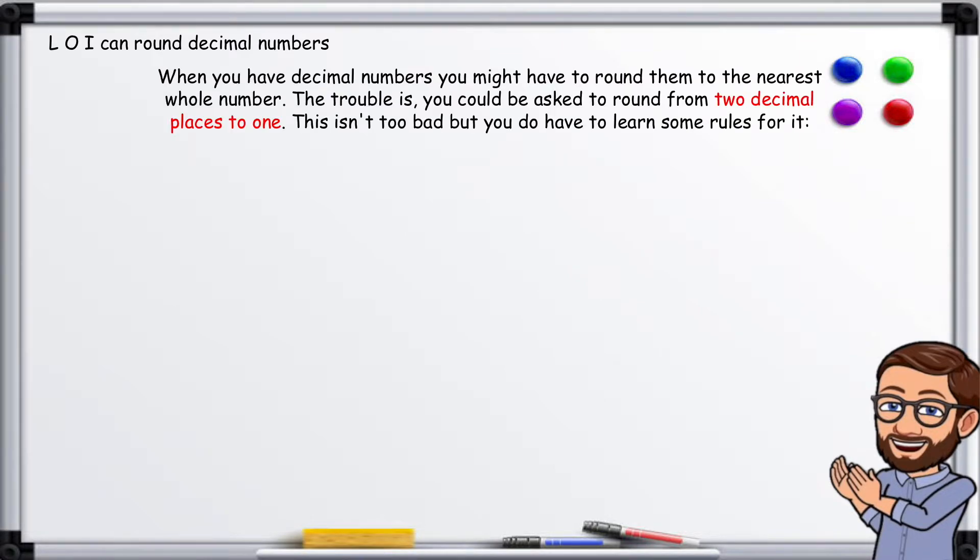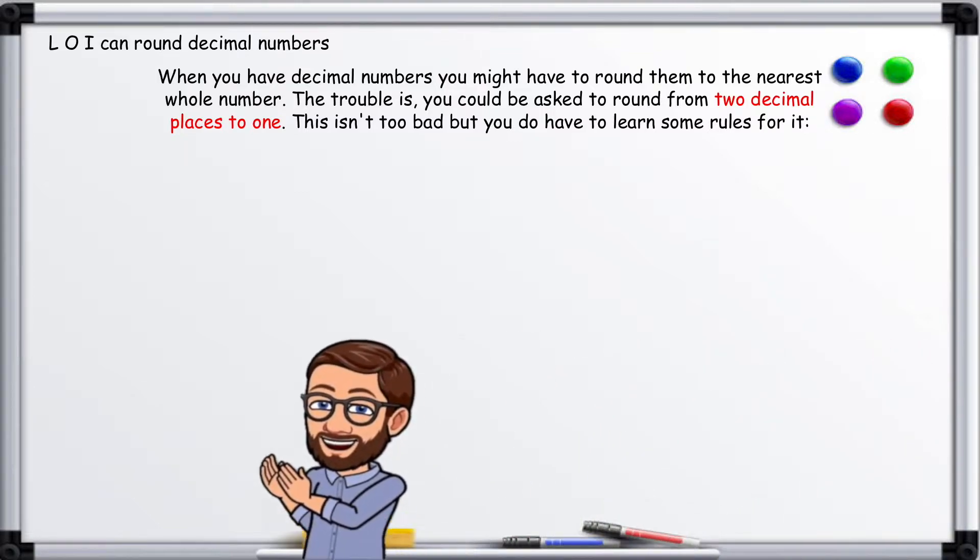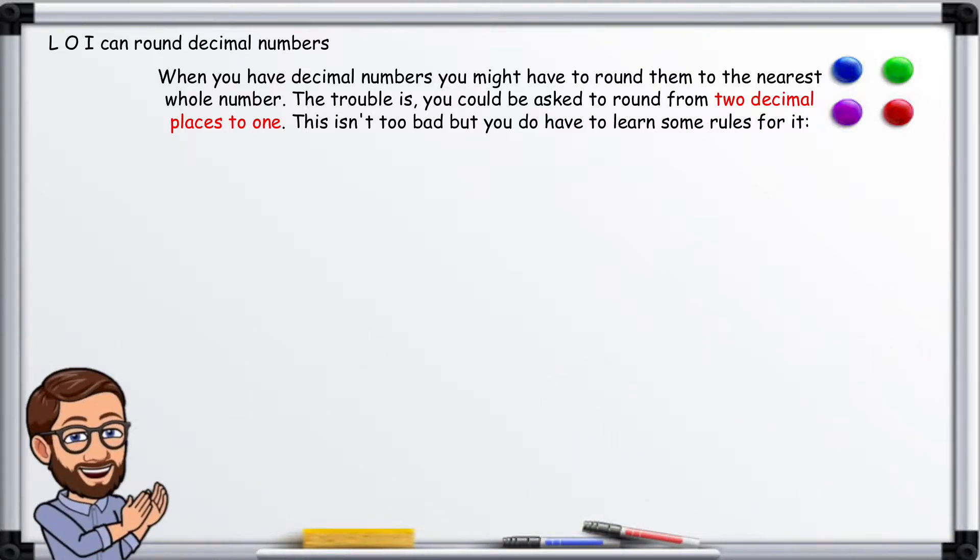When you have decimal numbers you might have to round them to the nearest whole number. The trouble is you could be asked to round from two decimal places to one. This isn't too bad but you do have to learn some rules for it.